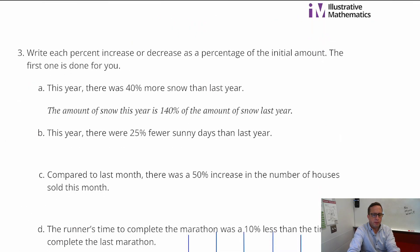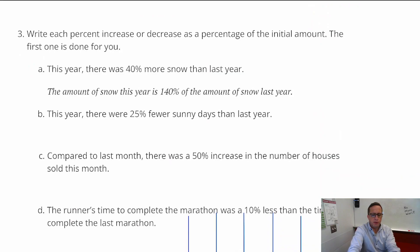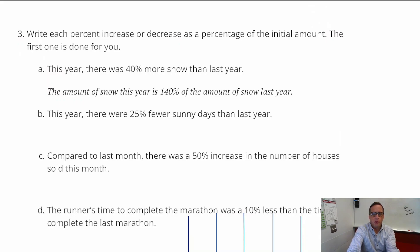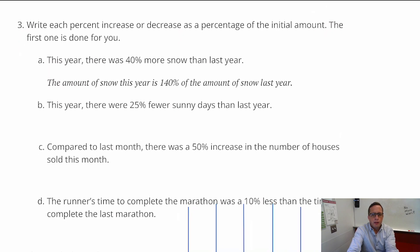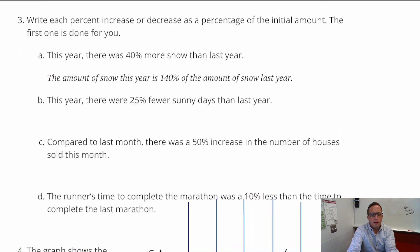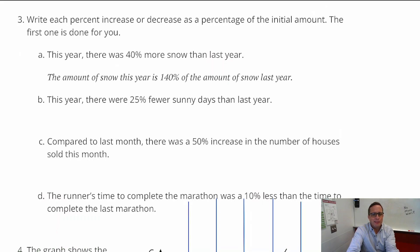Number 3: write each percent increase or decrease as a percentage of the initial amount. Remember, initial means the beginning amount. The first one is done for you — part A says this year there was 40% more snow than last year, so the amount of snow this year is 140% of the amount last year.